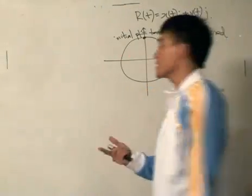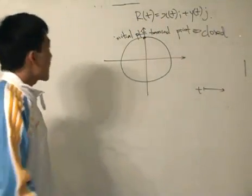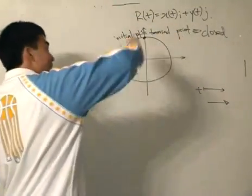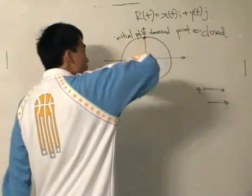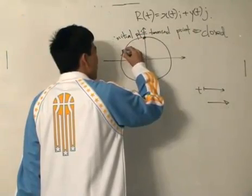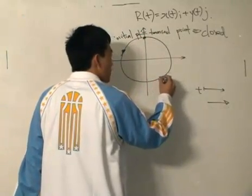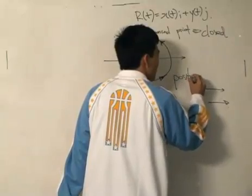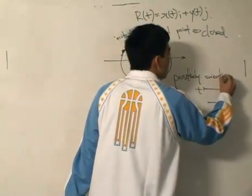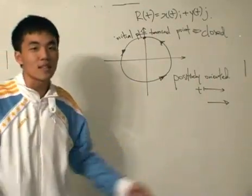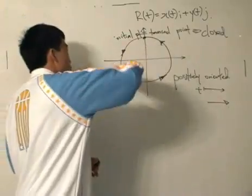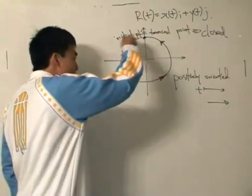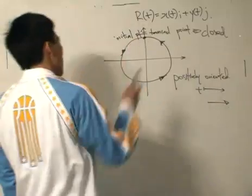If the curve is positively oriented, it goes in an anti-clockwise direction as t varies. So as t increases, it paints out the curve going in a counterclockwise direction — going like this around the loop. This would be positively oriented. Don't be confused: positive does not mean clockwise. Positively oriented means anti-clockwise. Direction is very important because it matters whether you go this way or that way. So we have closed and positively oriented.